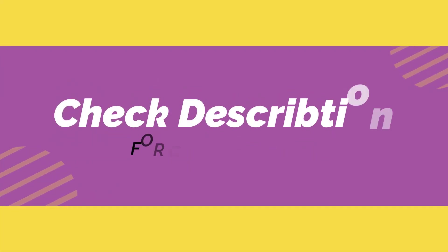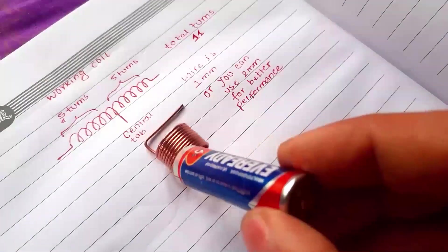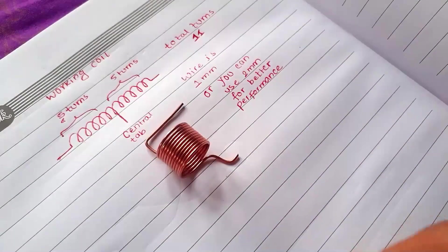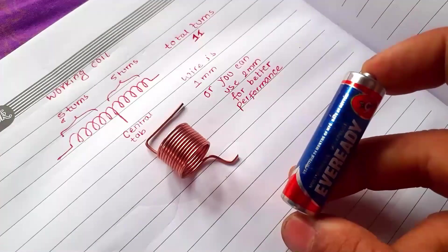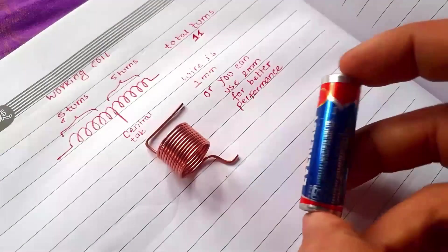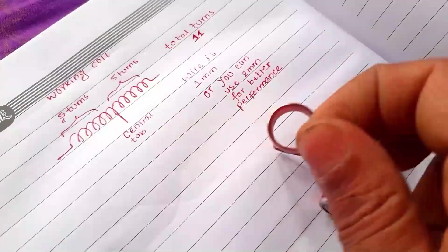Please check the circuit diagram below in the description box if you want to learn this circuit in detail. Before making an induction heater, you need to build a working coil, or you can say resonance coil. I use 1 mm wire, but you can also use 2 mm wire for better performance of the coil.